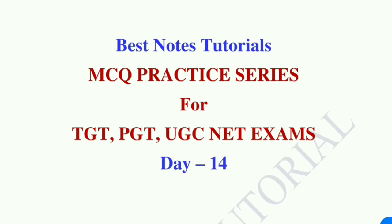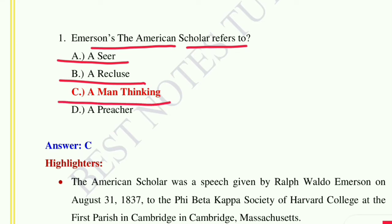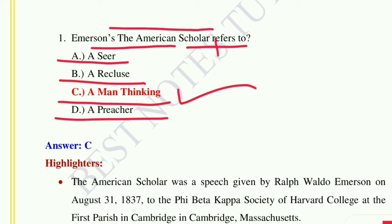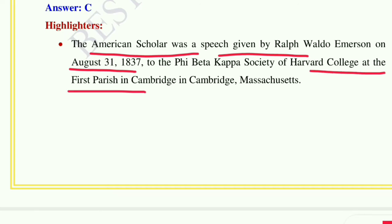Question number one: In 'The American Scholar,' Emerson refers to — option A: a seer, option B: a recluse, option C: a man thinking, option D: a preacher. The answer is option C, a man thinking. The American Scholar was a speech given by Ralph Waldo Emerson on August 31st, 1837, to the Phi Beta Kappa Society of Harvard College at Cambridge, Massachusetts.